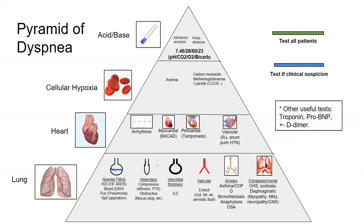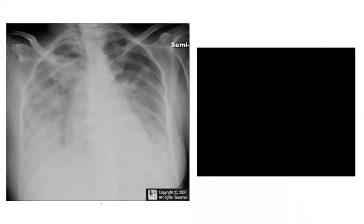You send off labs: CBC — patient doesn't have anemia, so that's ruled out. EKG shows sinus tachycardia, no ST changes. Troponin is negative. Pro-BNP comes back at 2000. You also send off a chest x-ray.